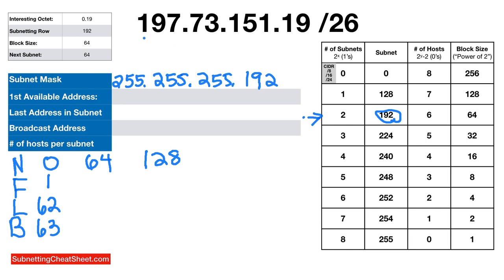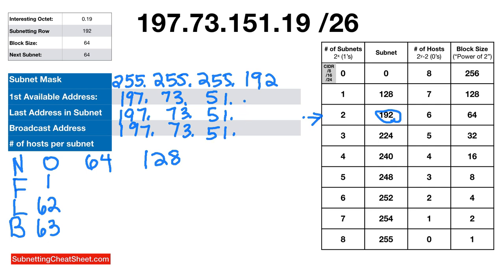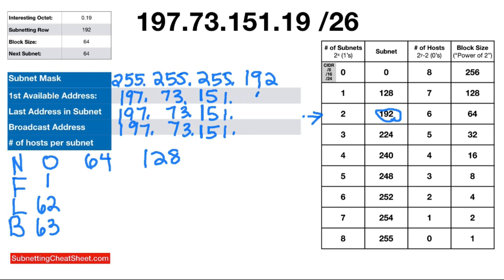The first available address: since it's /26 with 255.255.255, we just keep the first three octets the same and focus on the last. The network address is .0, the first host is .1, the last host is .62 (one less than broadcast), and the broadcast is .63. Full addresses: network = 197.x.x.0, first = 197.x.x.1, last = 197.x.x.62, broadcast = 197.x.x.63. Number of hosts is 2^y − 2, where y is the number of host bits. Here y = 6, so 2^6 − 2 = 64 − 2 = 62 hosts per subnet.